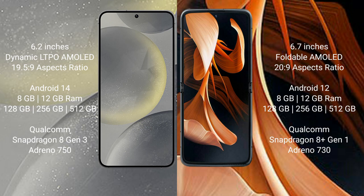Samsung Galaxy S24 comes with 8GB and 12GB RAM, and 128GB, 256GB, 512GB internal storage, with a Qualcomm Snapdragon 8 Gen 3 processor and Adreno 750 GPU. Motorola Razr comes with 8GB and 12GB RAM, and 128GB, 256GB, 512GB internal storage, with a Qualcomm Snapdragon 8 Gen 1 processor and Adreno 730 GPU.